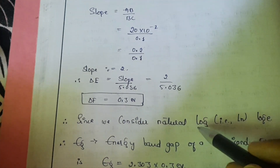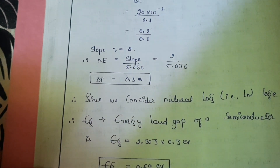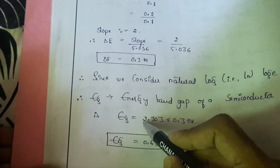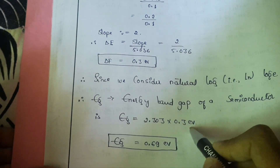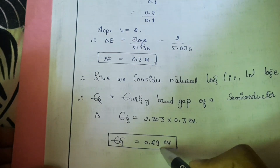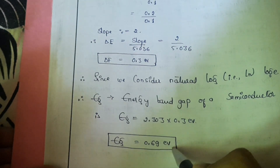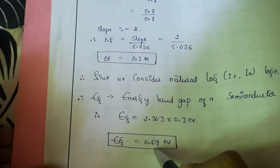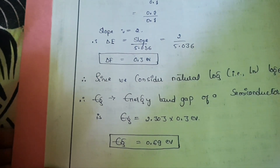Since we consider the natural log, the energy gap Eg of the semiconductor is given by: Eg = 2.303 × 0.3 electron volts, which equals 0.69 electron volts. This result is for germanium, which has an actual energy band gap of 0.7 electron volts — very close to our calculated value of 0.69 electron volts.